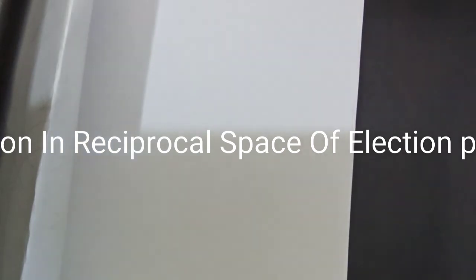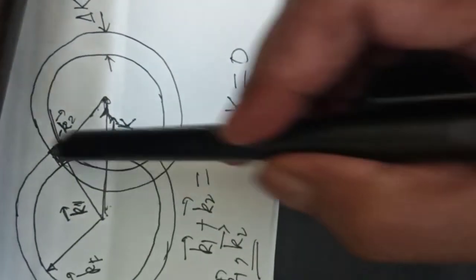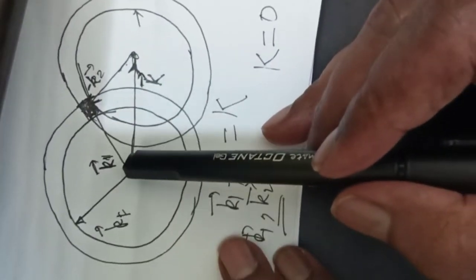Now since the interaction in k-space is restricted to a shell with an energy thickness of ℏωD above EF0, I am going to draw two spherical shells with Fermi radius kF and thickness Δk describing the pair of wave vectors k₁ and k₂.